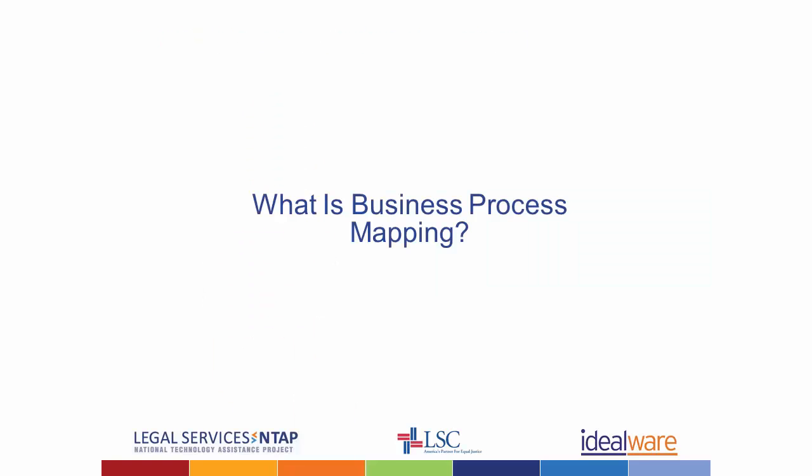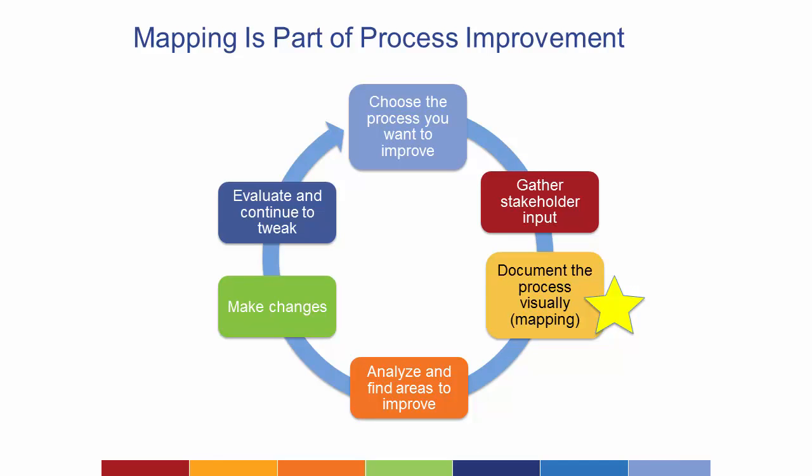Let's go on to just a few basics of what business process mapping actually is. Mapping is just one step in process improvement. The general steps include: choosing the process you want to improve, getting input from stakeholders, mapping the process — which is what we'll focus on today — and then analyzing the process to find areas to improve. It's really hard to separate mapping and do it effectively unless you've considered those surrounding steps.